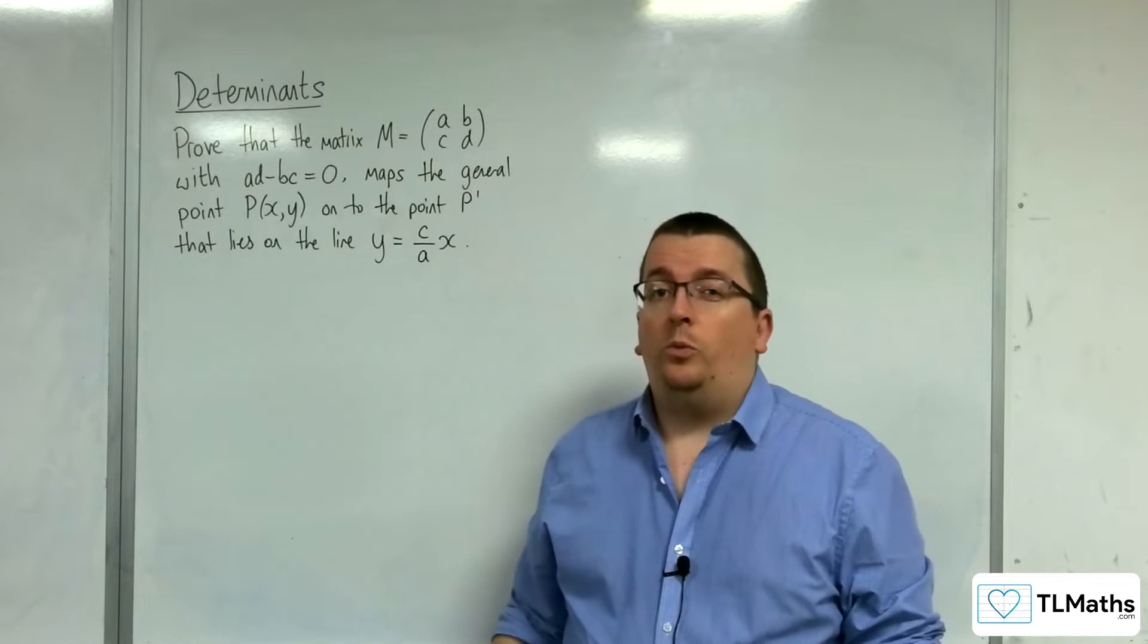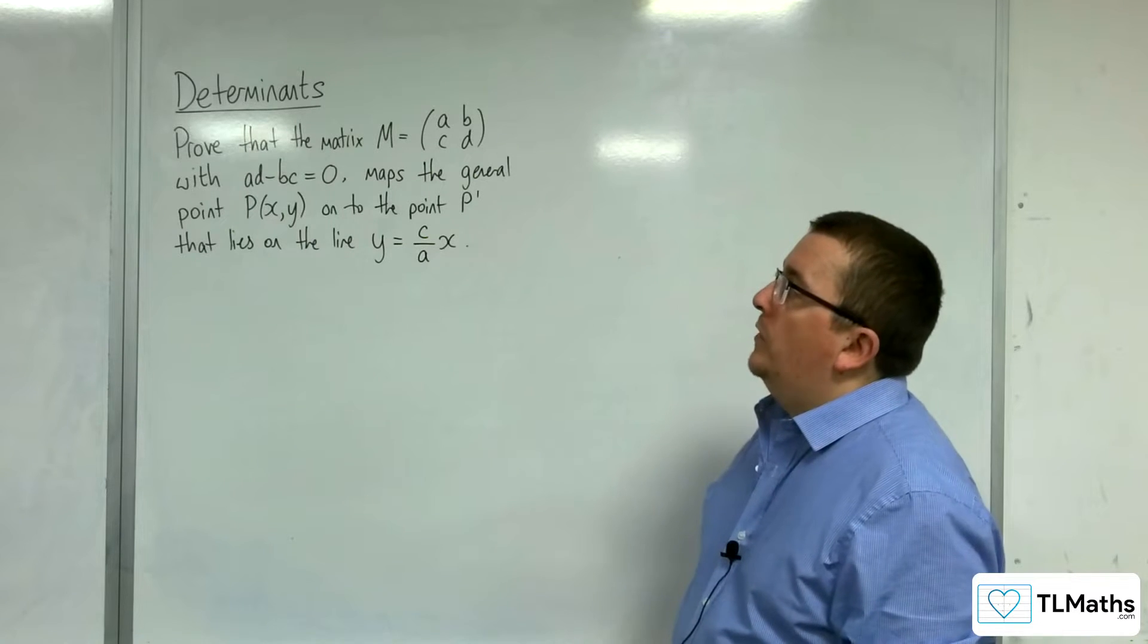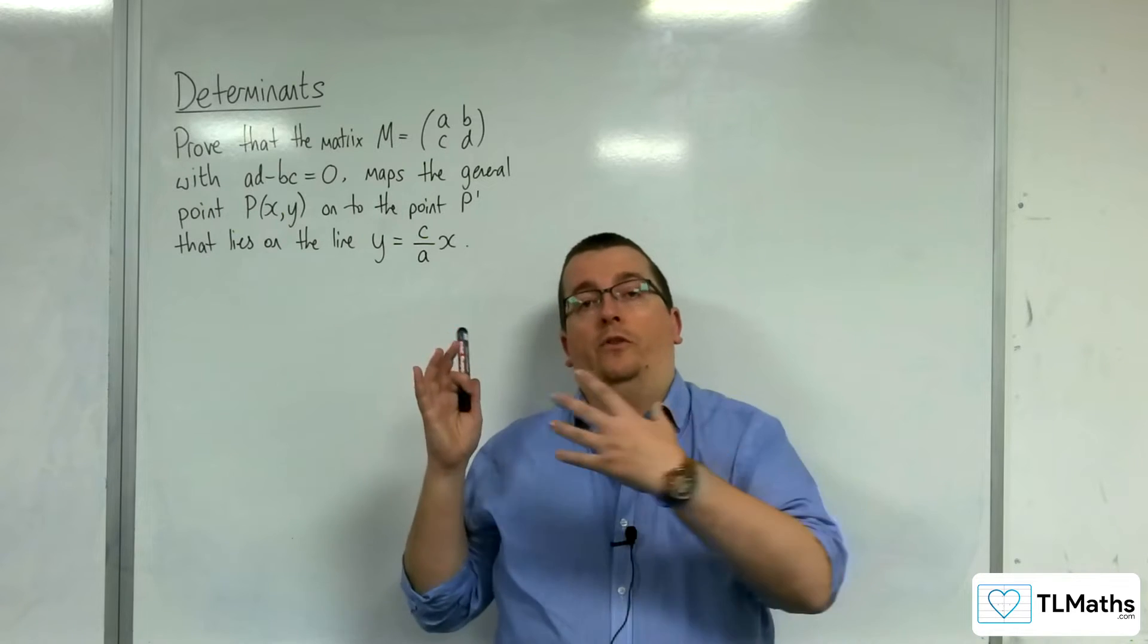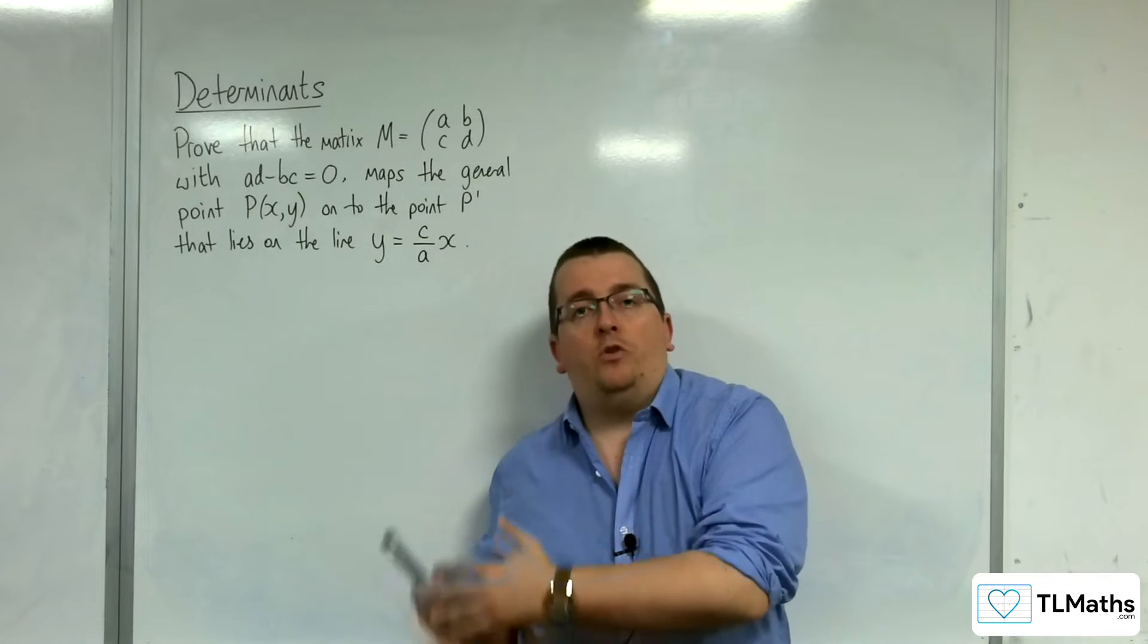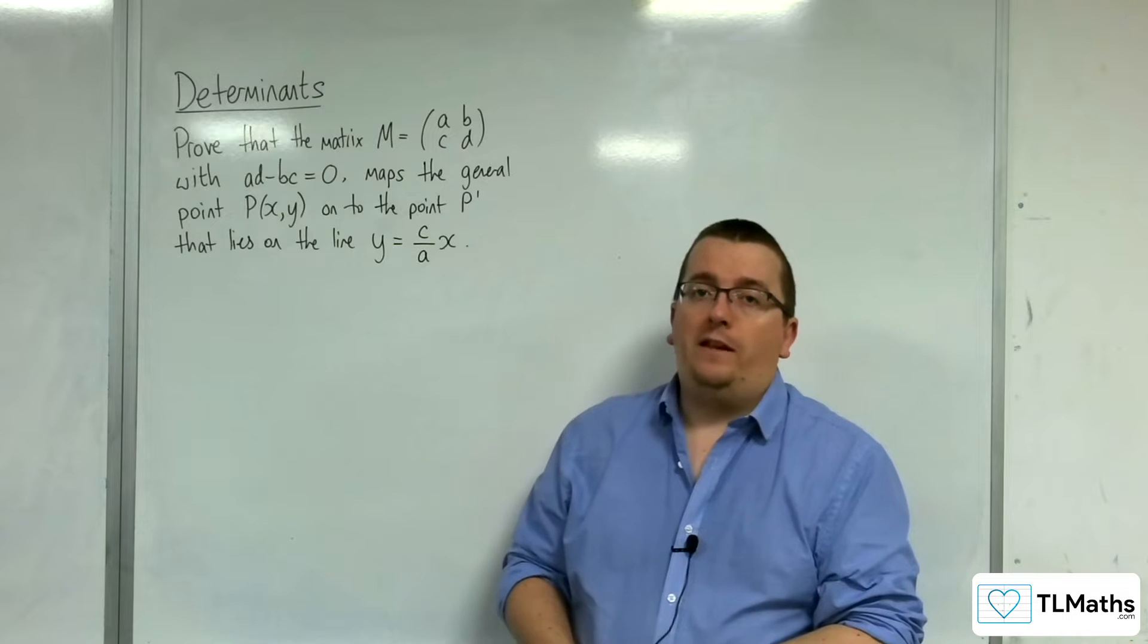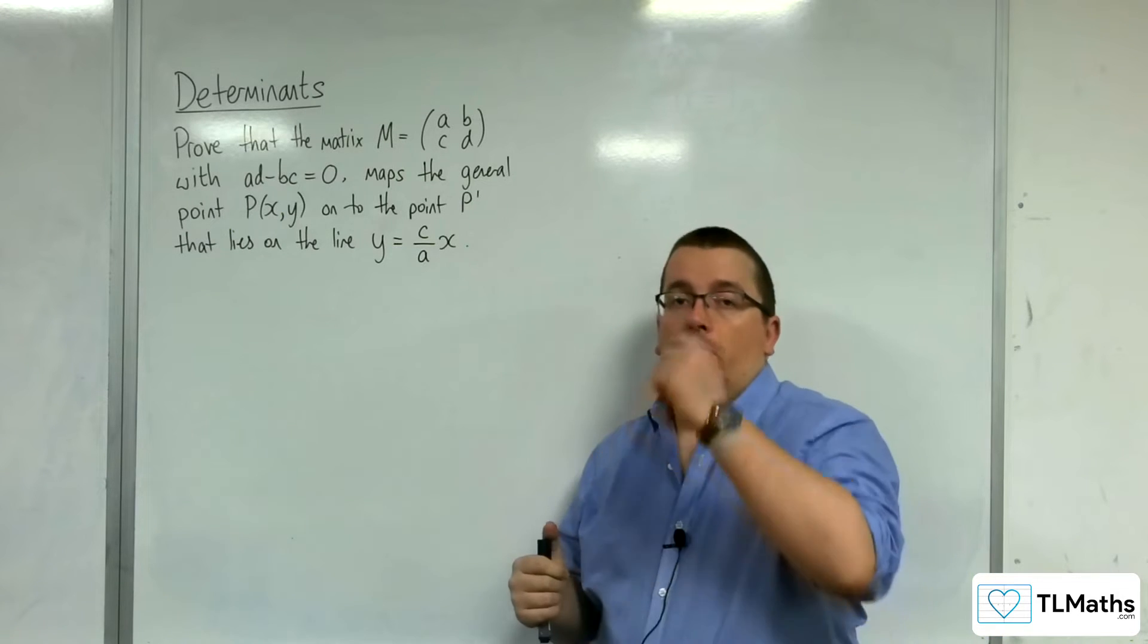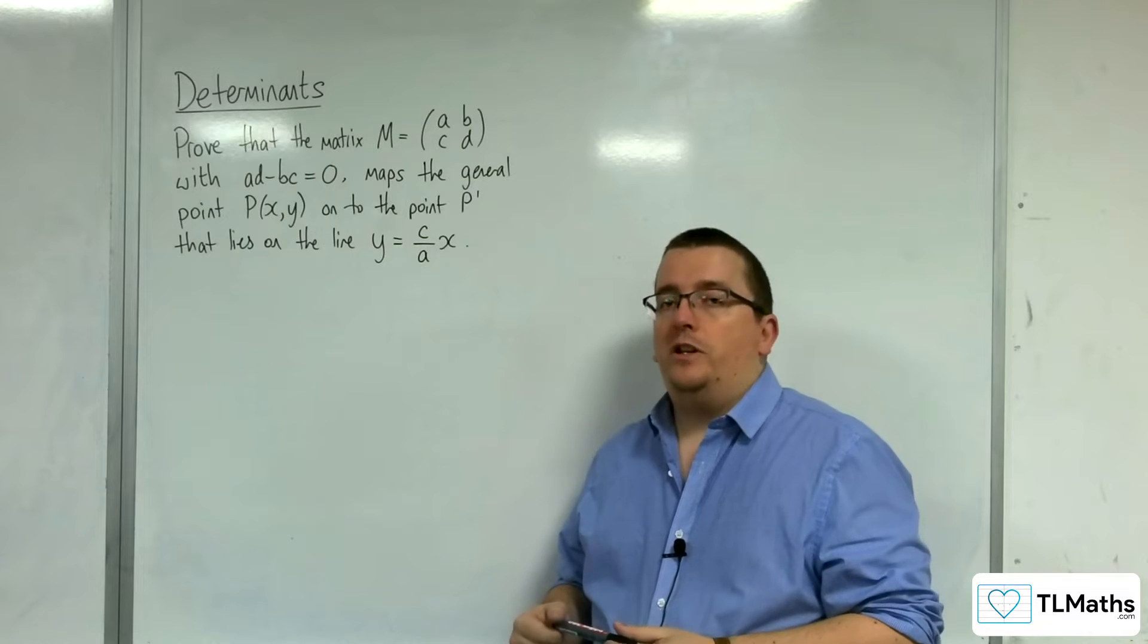In the previous two videos, we've really been building up to this proof. We investigated a couple of videos ago where we saw that if the determinant of a 2x2 matrix was 0, then that matrix would map any point onto a line going through the origin. And we've seen a couple of matrices where we've had to work out what that line actually was.